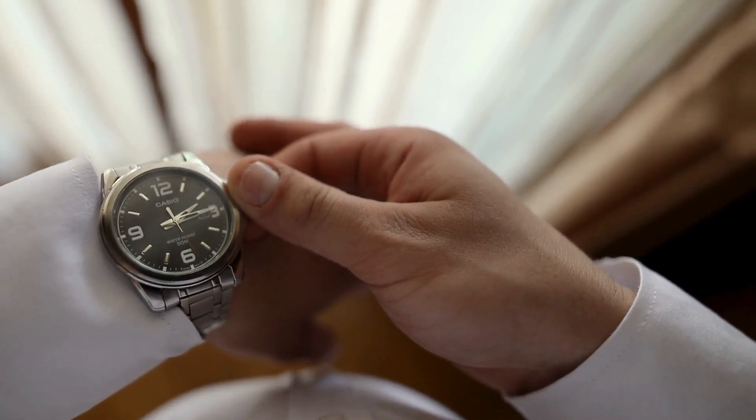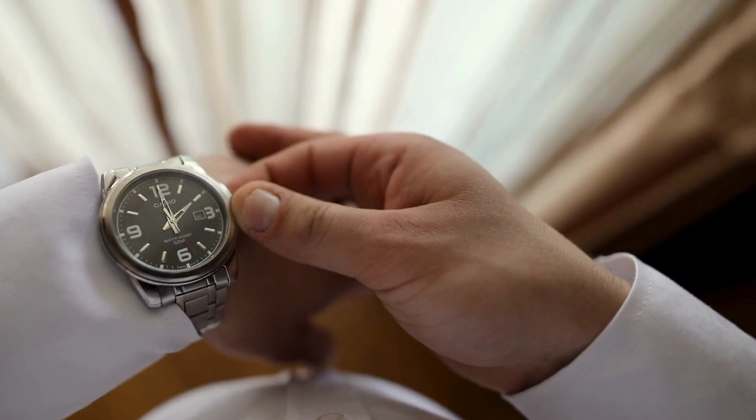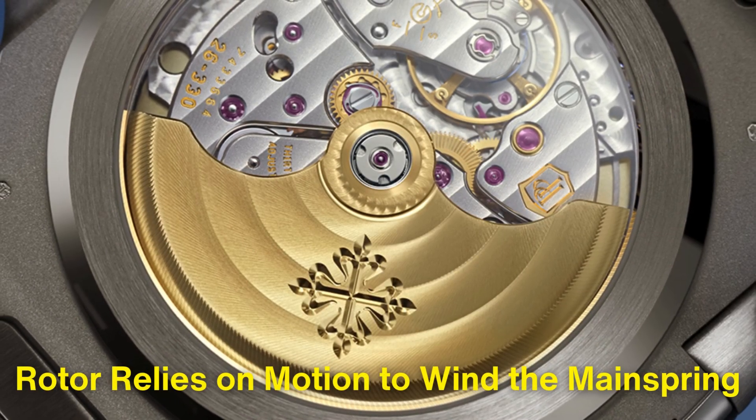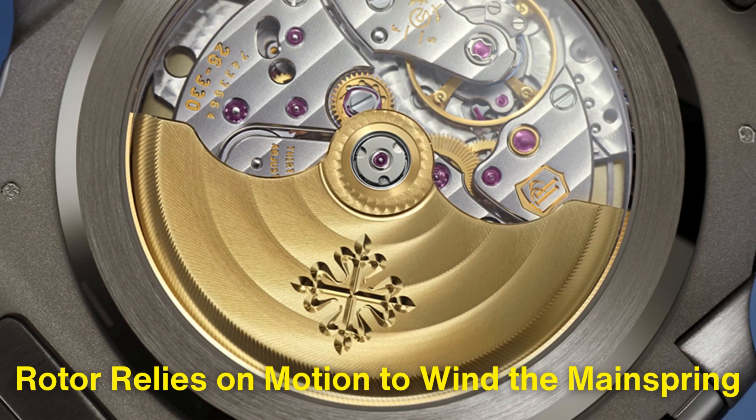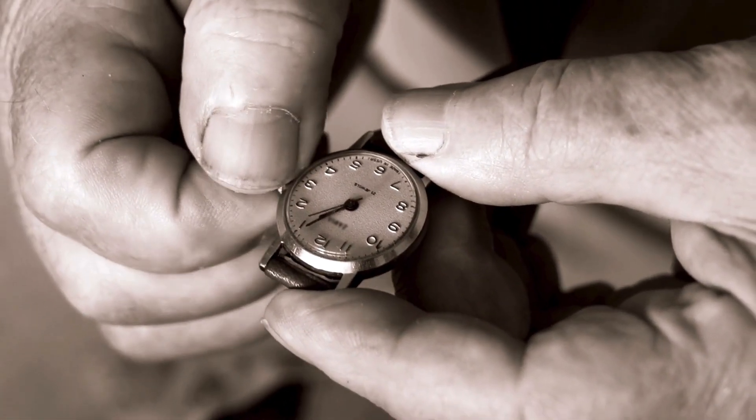However, even automatic watches may need to be manually wound if they are left unworn for an extended period. That's because the rotor relies on motion to wind the mainspring, and if the watch remains stationary, it will eventually stop ticking. But once wound again, the watch will pick up right where it left off.